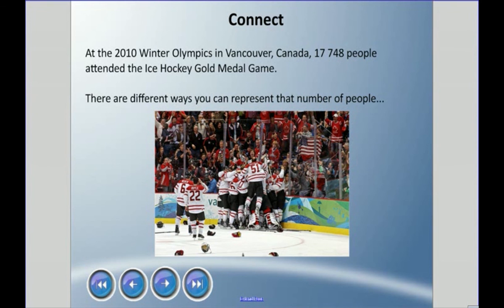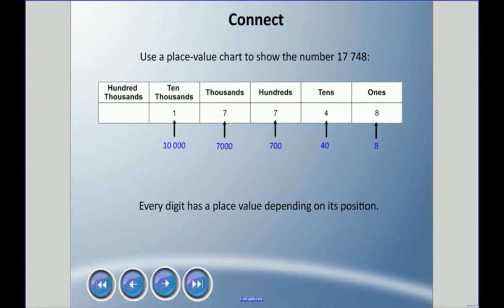There are a few different ways we can represent that number of people. We can use something called a place value chart, and I've entered all the digits in the correct place. And really the key here is, do we know what these digits represent? Okay, do you know that the one sitting there actually means 10,000? Do you know the seven in the thousands actually means the number 7,000, or 700, or 40, or 8?